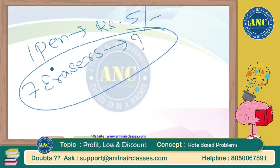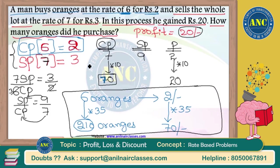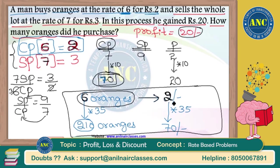Lochana, I believe you are asking about this last part. What I taught you is: cost price of 6 articles is 2 rupees — meaning you purchased 6 oranges and paid me 2 rupees. But as we found out, you actually did not pay only 2 rupees in total; you actually paid 70 rupees. So 2 × 35 = 70, and therefore 6 × 35 = 210 oranges.